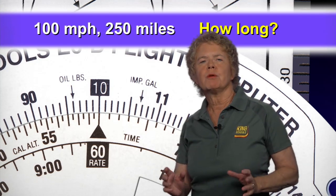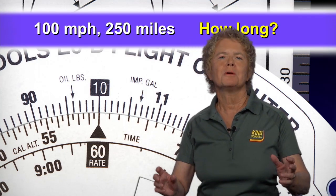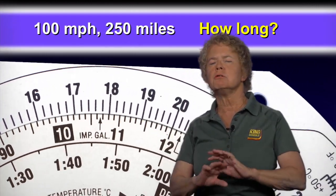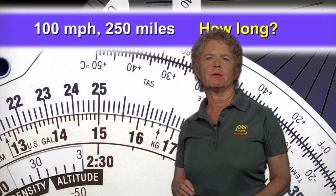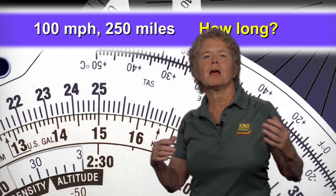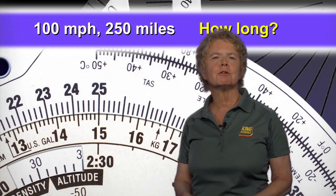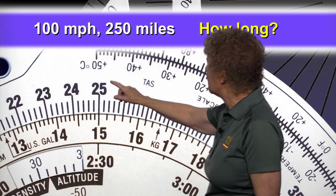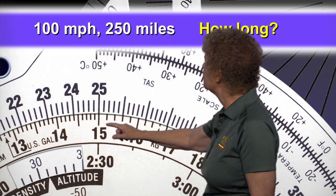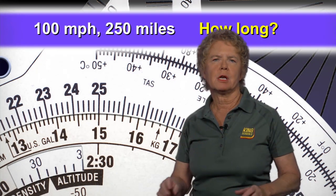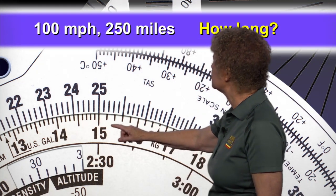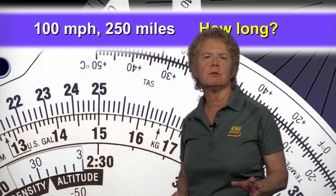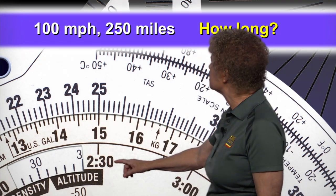Now we want to know: if we fly for 250 miles, how long will it take? Look around the outside scale of the flight computer — do not move the inner dial. Move the whole flight computer together and look for 25, because we don't have 250 on the flight computer. Find 25 on the outside scale, and the next scale in will tell us how many minutes it will take to fly 250 miles. It will take 150 minutes, and the far inner scale confirms that 150 minutes is 2 hours and 30 minutes.